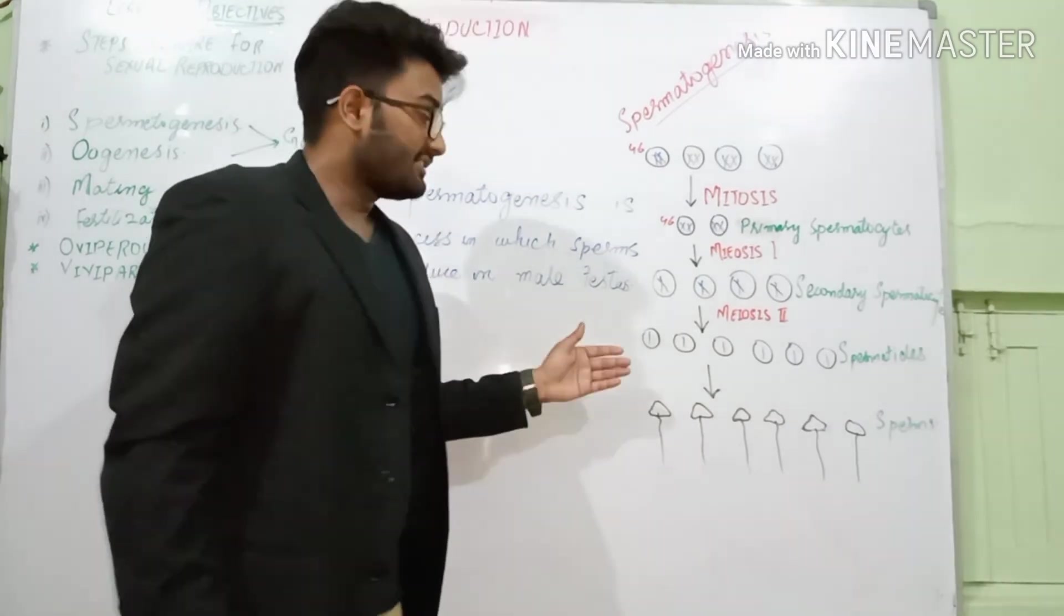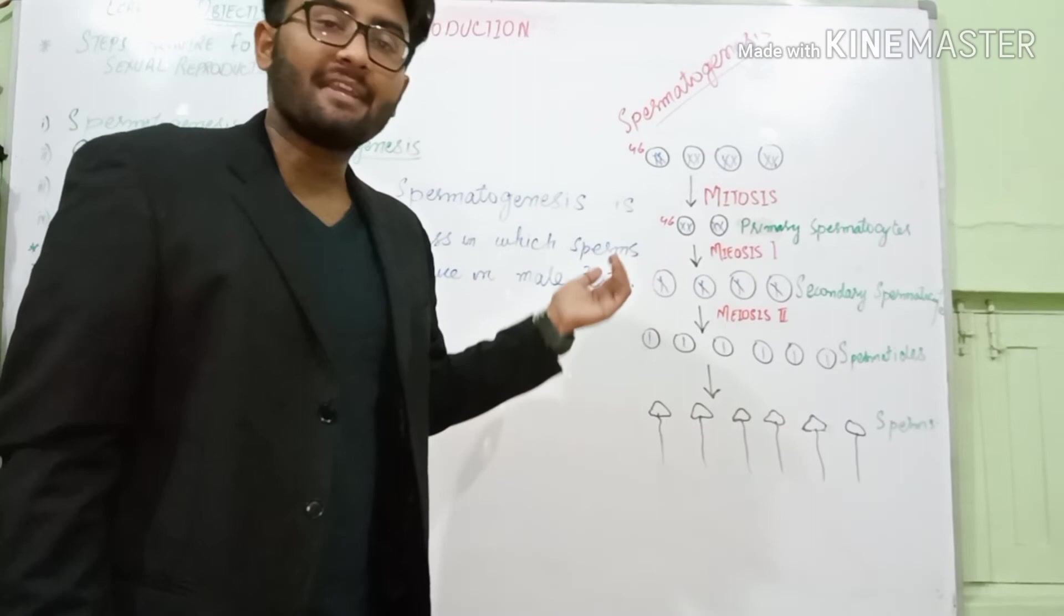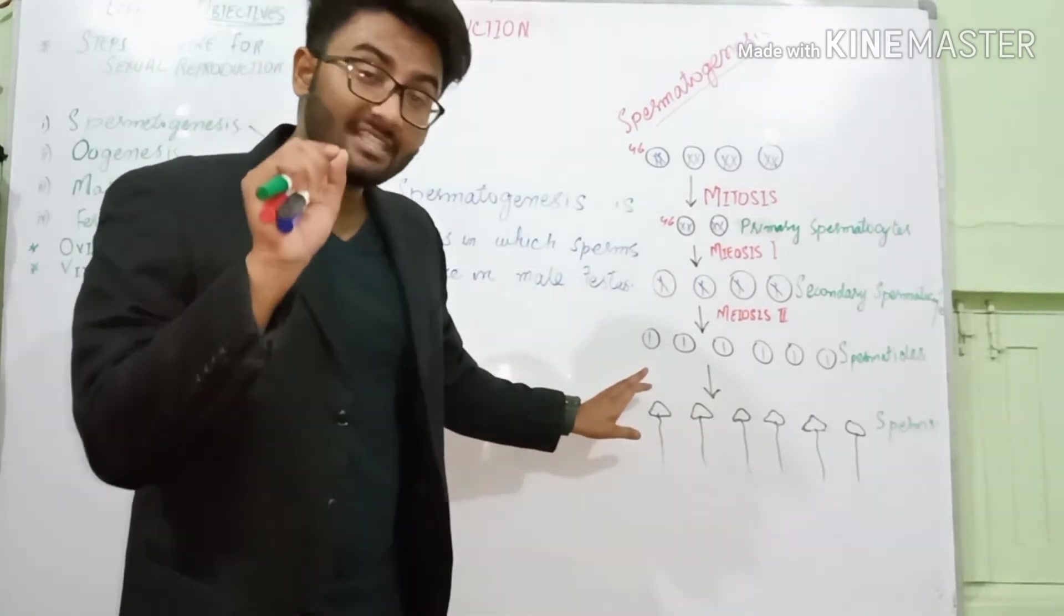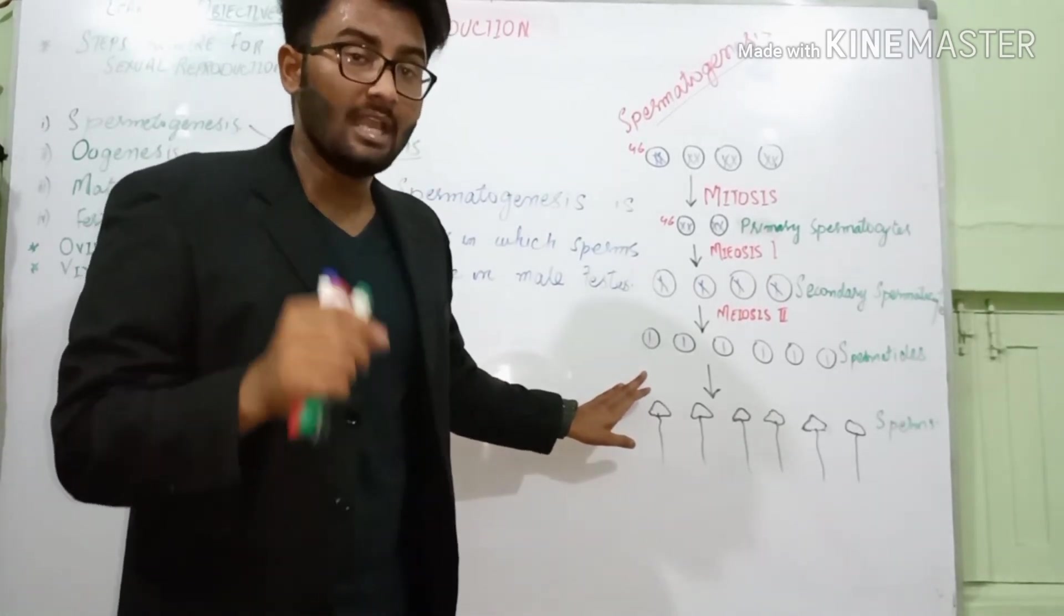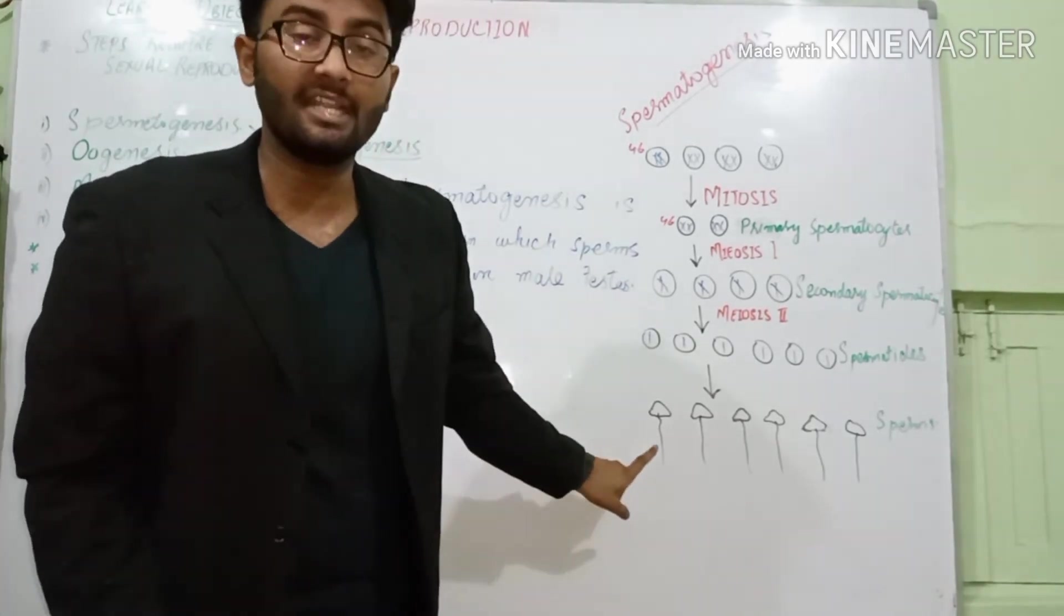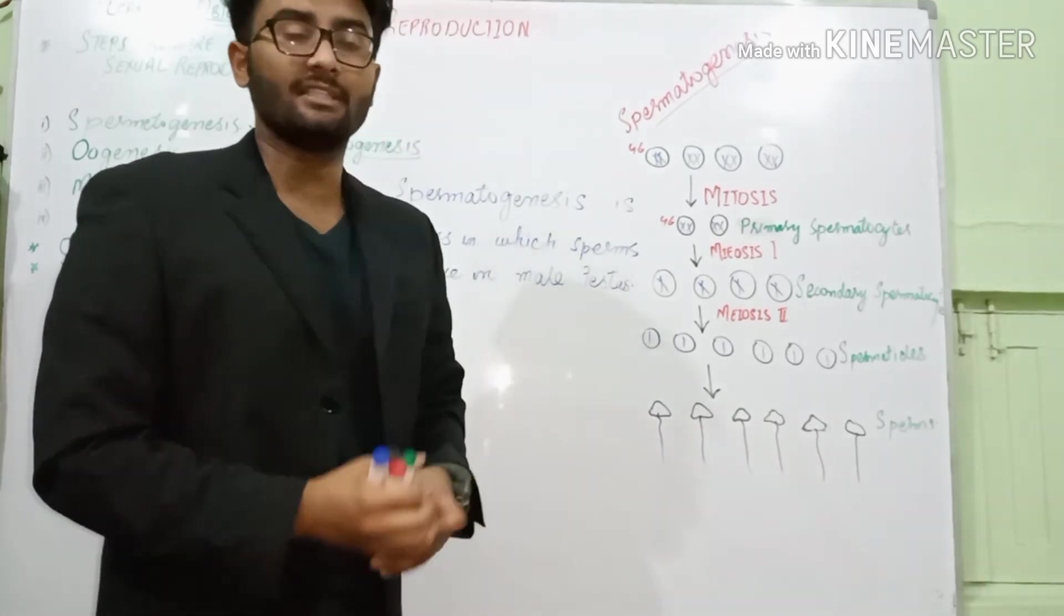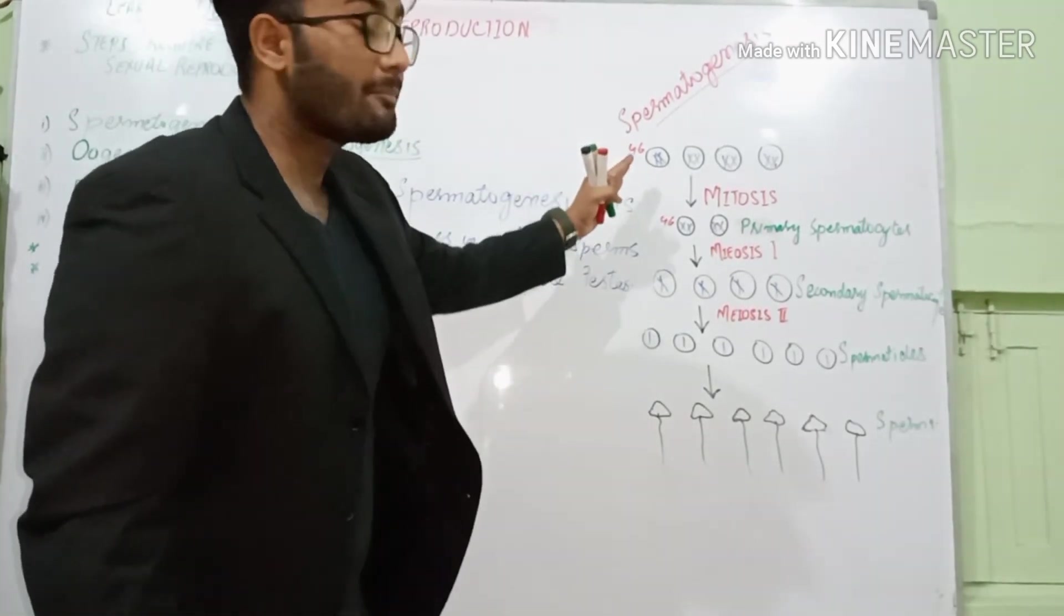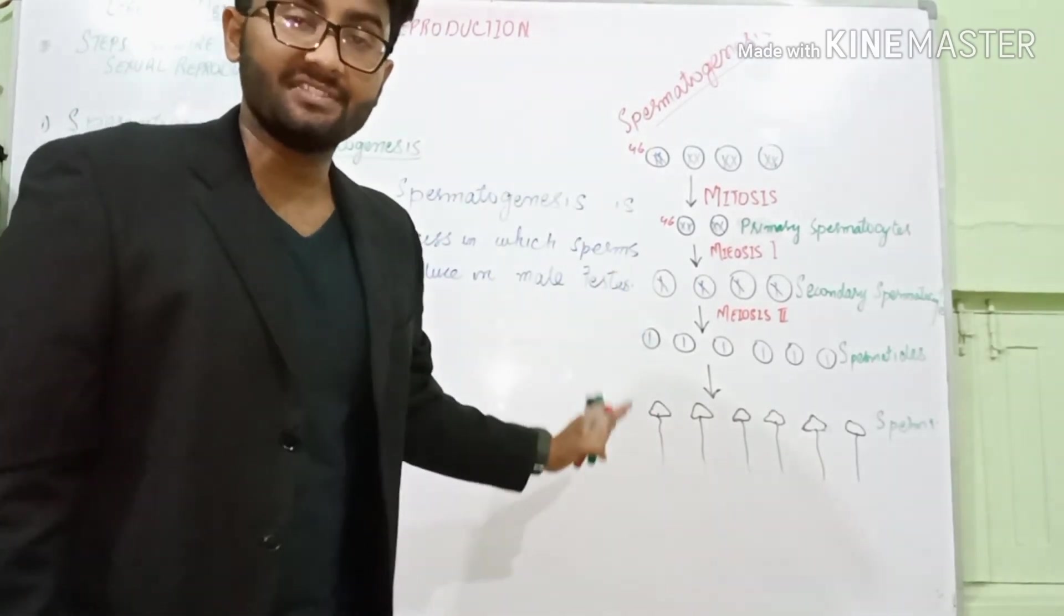And last stage, these spermatids, every spermatid, with the help of some chemical situations, turned into the sperms. Not a single secondary spermatocyte undergoes degeneration during this whole process. All of these spermatids will not be lost, automatically all will turn into sperms. The complete process takes ten weeks. It takes ten weeks in completion. The complete process takes ten weeks to produce sperms in male reproductive system.